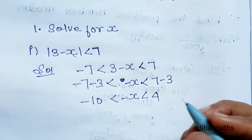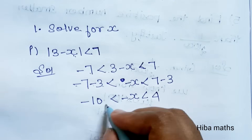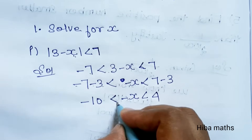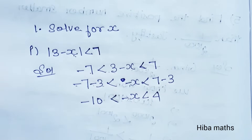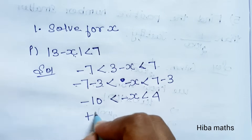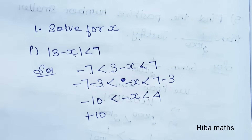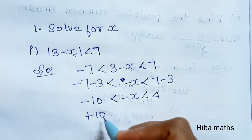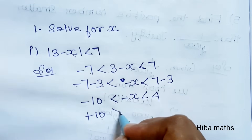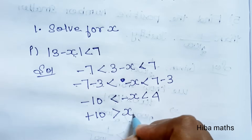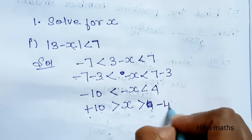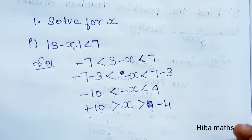The x value is also minus, so we will multiply through by minus 1. When we multiply by a negative, the sign changes — less than becomes greater than. So minus 10 becomes plus 10, and minus x becomes x. Greater than symbol reverses: x is greater than minus 4 and less than plus 10.